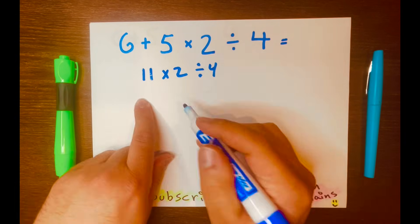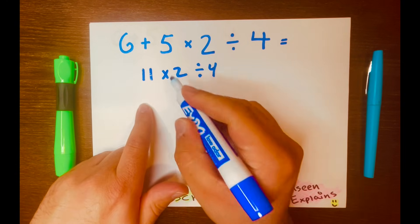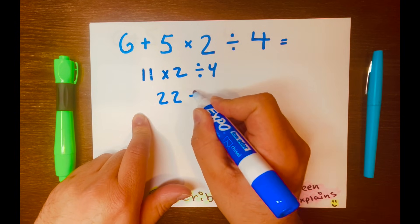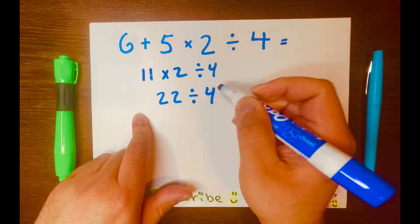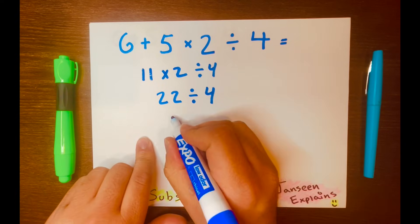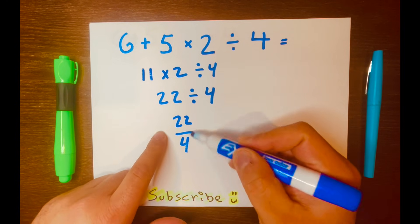And then the 4 down. Now they're looking at this, so they multiply 11 times 2, which is 22. Then they'll bring down the division symbol and the 4. Now they're looking at 22 divided by 4.